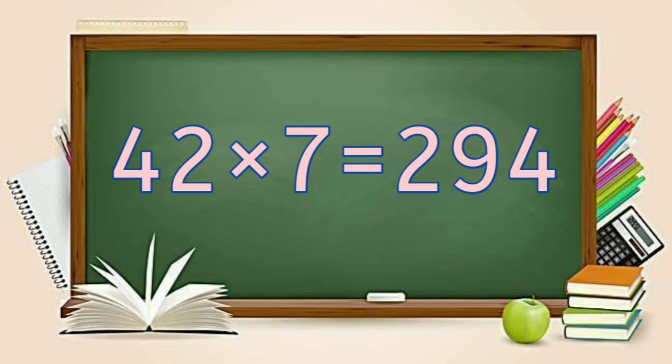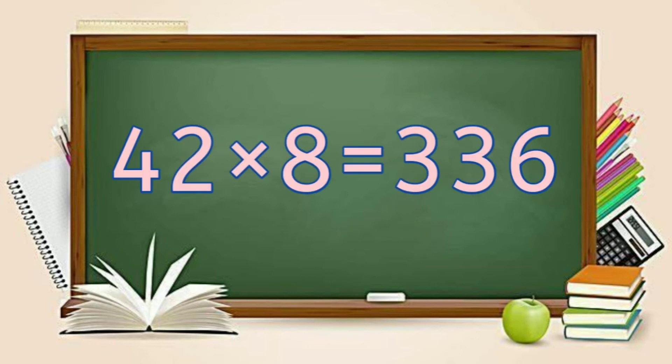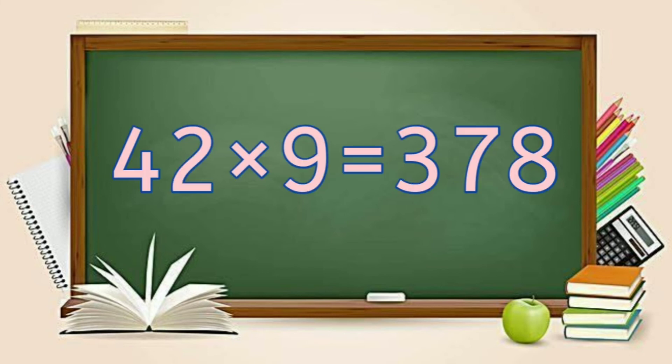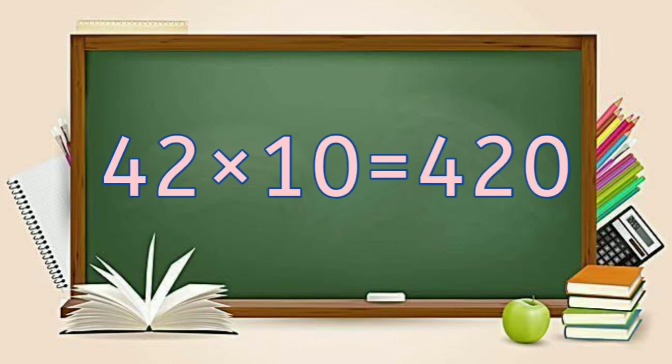42, 7's are 294. 42, 8's are 336. 42, 9's are 378. 42, 10's are 420.